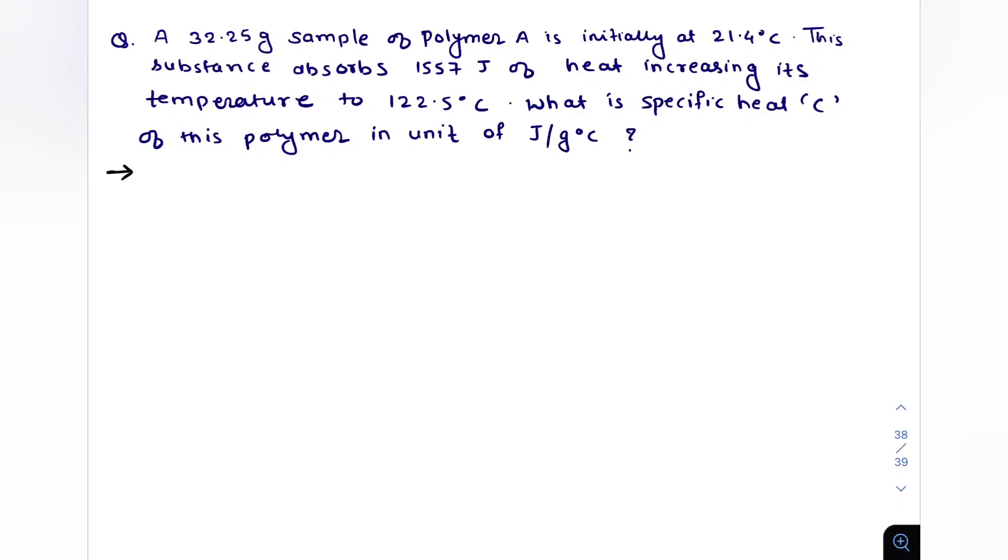Our today question is: a 32.25 gram sample of polymer A is initially at 21.4 degree Celsius. This substance absorbs 1557 joules of heat, increasing its temperature to 122.5 degree Celsius. What is the specific heat capacity of the polymer in units of joule per gram degree Celsius?